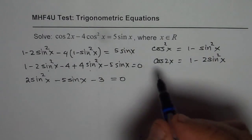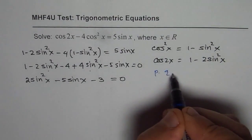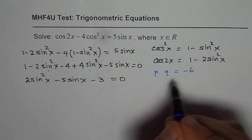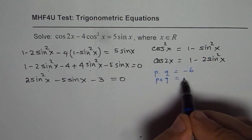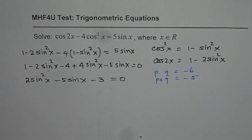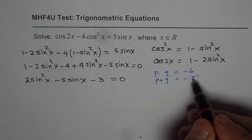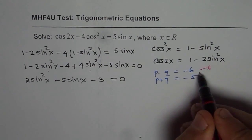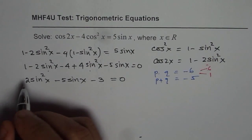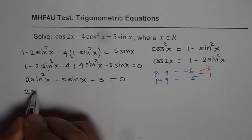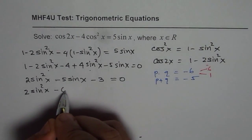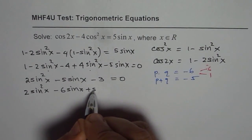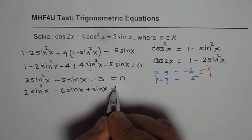Now we are looking for product and sum. The product of 2 numbers should be minus 3 times 2, which is minus 6. And sum of these numbers should be minus 5. So the numbers are—the bigger number should be negative—so it is 6 negative and 1 positive. So it is 2 sine square x, negative 6 sine x, plus sine x, minus 3 equals 0.